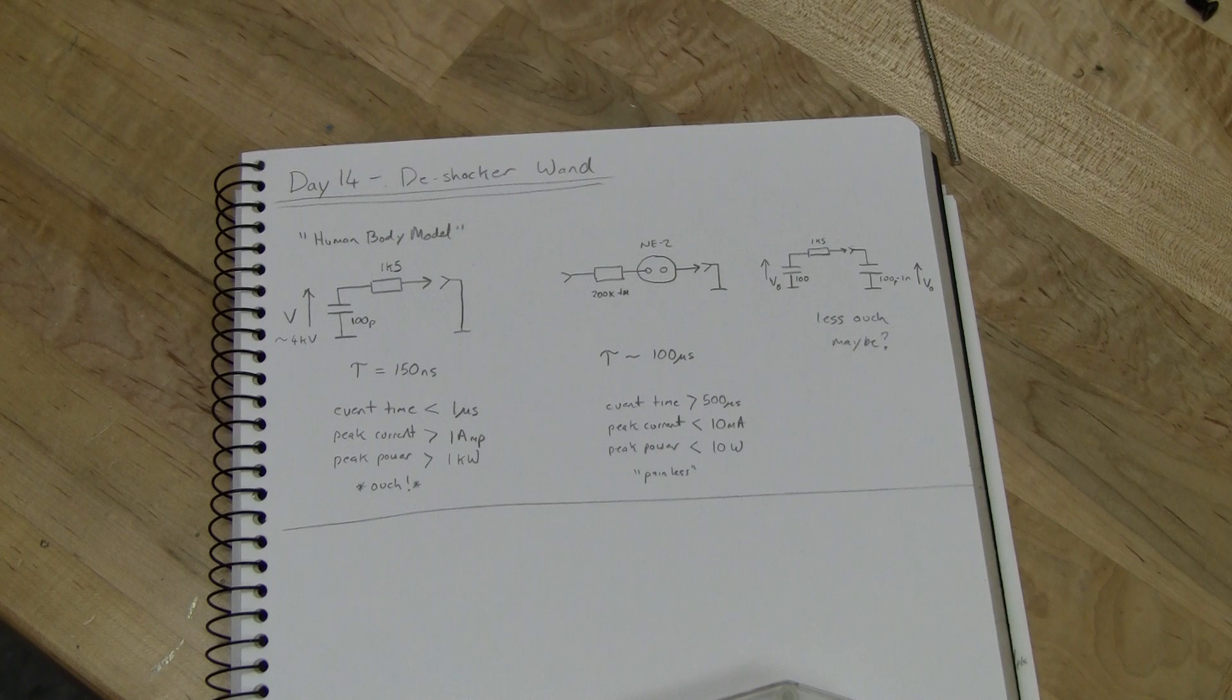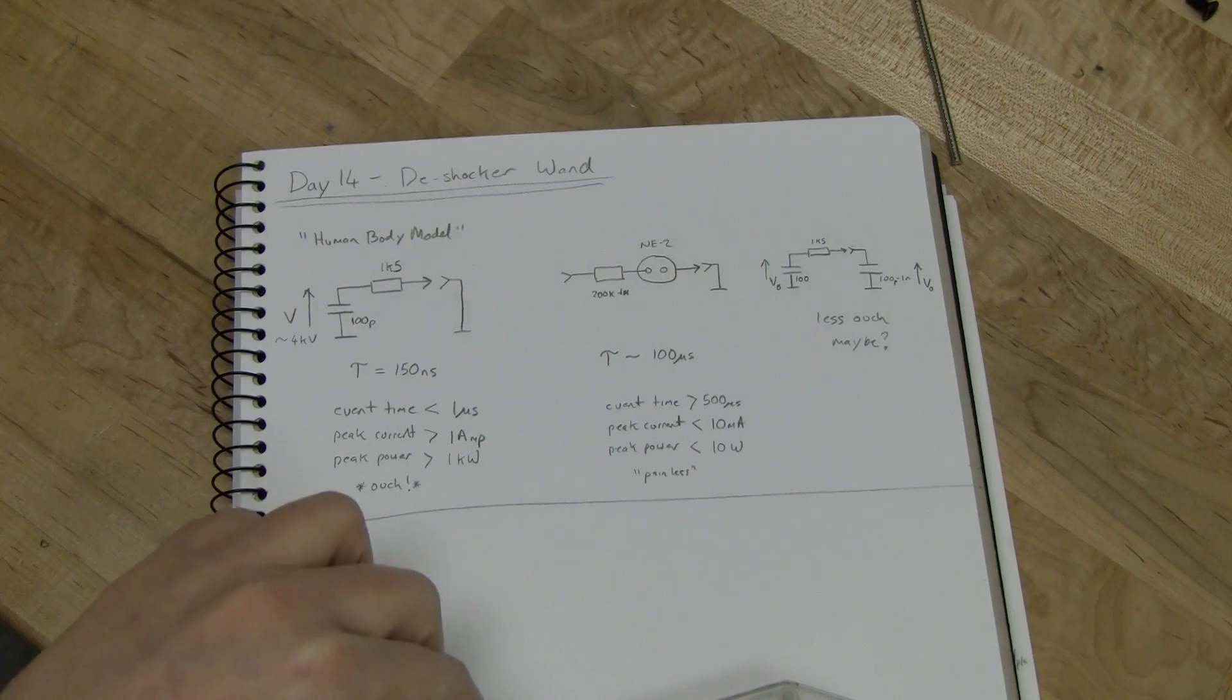One way to show that the equalization has happened and it's essentially safe to touch something afterwards is to put a neon bulb in series. The neon bulb has an ignition voltage of probably somewhere around 70 to 90 volts and then a dropout voltage of around 50 volts. Once the neon bulb will flash when you touch the object and equalize with it, but once you've equalized with it there will probably be about 50 volts or so difference between you and the object which is not going to produce enough current to be painful.